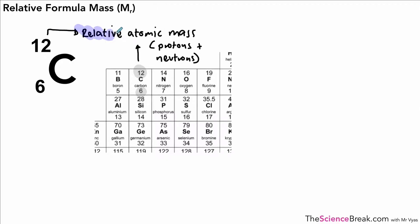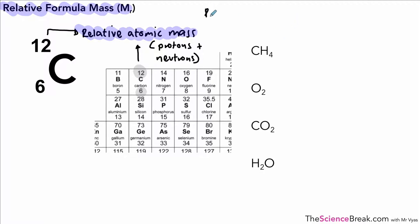We can use the relative atomic mass to work out something called the relative formula mass. Very often we don't have just elements — we have compounds. Here are four examples: methane, oxygen (which is actually an element), carbon dioxide, and water. The relative atomic masses are shown on screen from the periodic table — you don't need to memorize those.